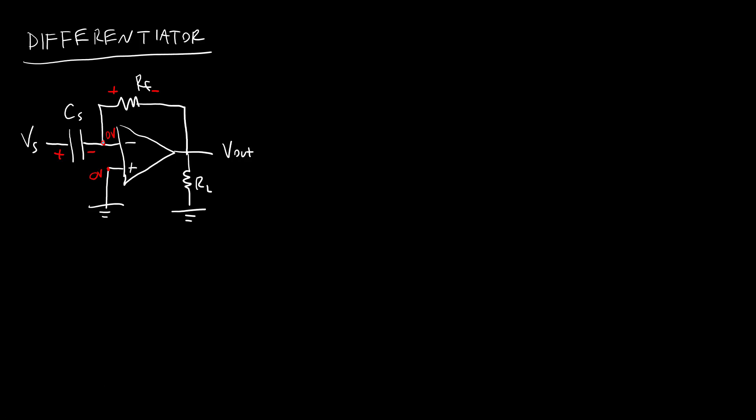I am also going to apply KCL at this node. So I know the current coming in through the capacitor must be equal to the current through the resistor because the current into this input is 0. Again, that is one of my ideal op-amp assumptions. So I can write right off the bat that the current through the capacitor equals the current through the resistor. I know that for my resistor, I have Ohm's Law. So V equals IR. And for my capacitor, I have the capacitor equation I equals C dV dt. So I am going to, as I have done previously, solve both of these equations for I and set them equal to each other.